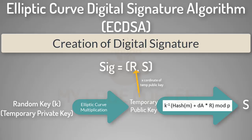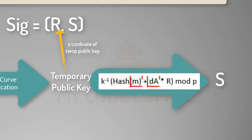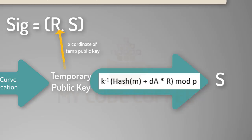Now that you have the r and s values, you have the digital signature. You used transaction data and private key to create the digital signature, which means for different transaction data you will get different digital signatures even using the same private key. The private key is multiplied by the x-coordinate of the temporary public key, making it impossible to track back to the private key — because in elliptic multiplication you can never recover the multiplier even knowing the result and one value. This equation makes it impossible to derive the private key from the digital signature.